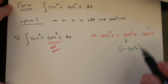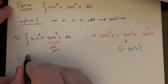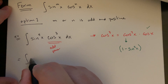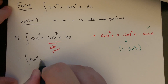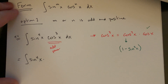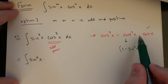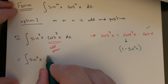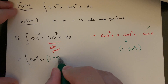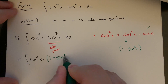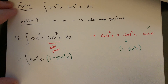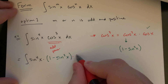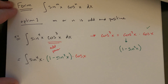Let me rewrite this. The sine to the fourth we're not touching — it has the even power. Cosine cubed becomes cosine squared times cosine x, and cosine squared is replaced by one minus sine squared of x, times this one leftover cosine.